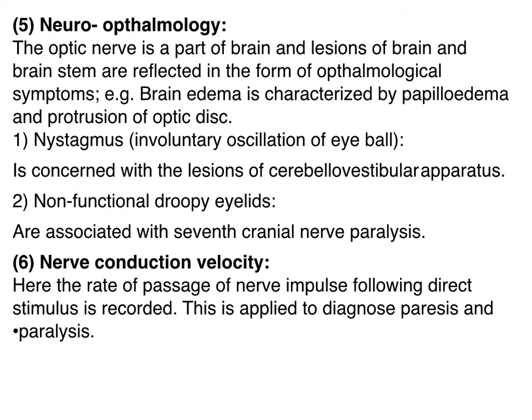Number five: neuro-ophthalmology. The optic nerve is a part of the brain, and lesions of the brain and brain system are reflected in ophthalmological symptoms. For example, brain edema is characterized by papilledema and protrusion of the optic disc. Nystagmus and involuntary oscillation of the eyeball are associated with lesions of the cerebral vestibular apparatus.